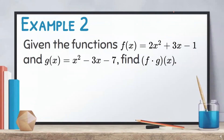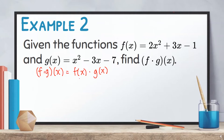Let us have another example. Given the functions f of x equals 2x squared plus 3x minus 1 and g of x equals x squared minus 3x minus 7, find f times g of x. We substitute the given f of x and g of x to our formula, giving us 2x squared plus 3x minus 1 times x squared minus 3x minus 7.